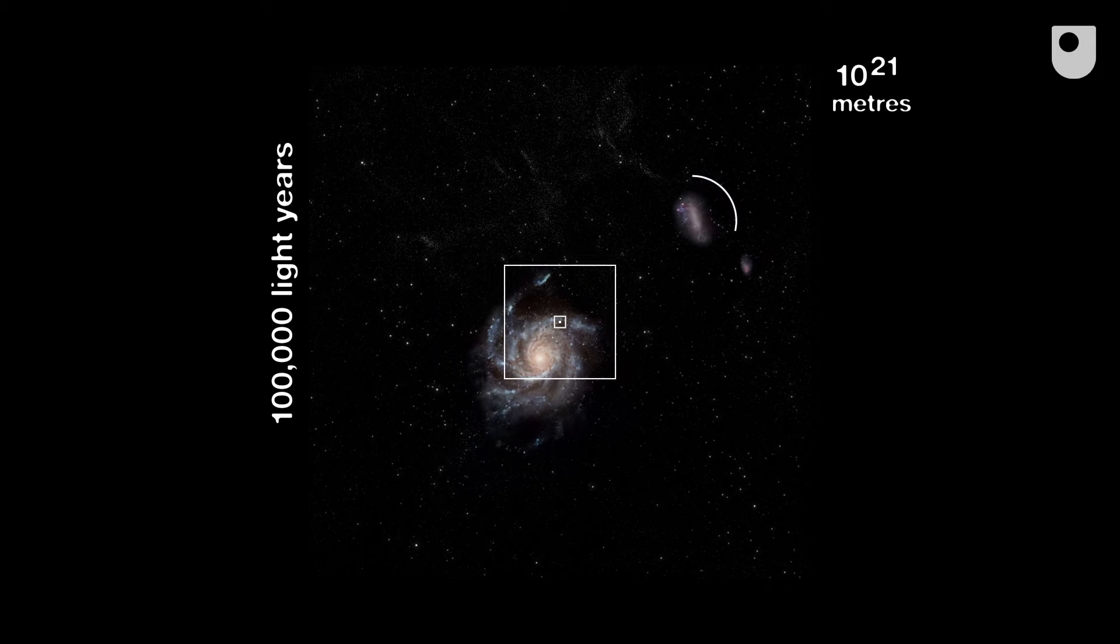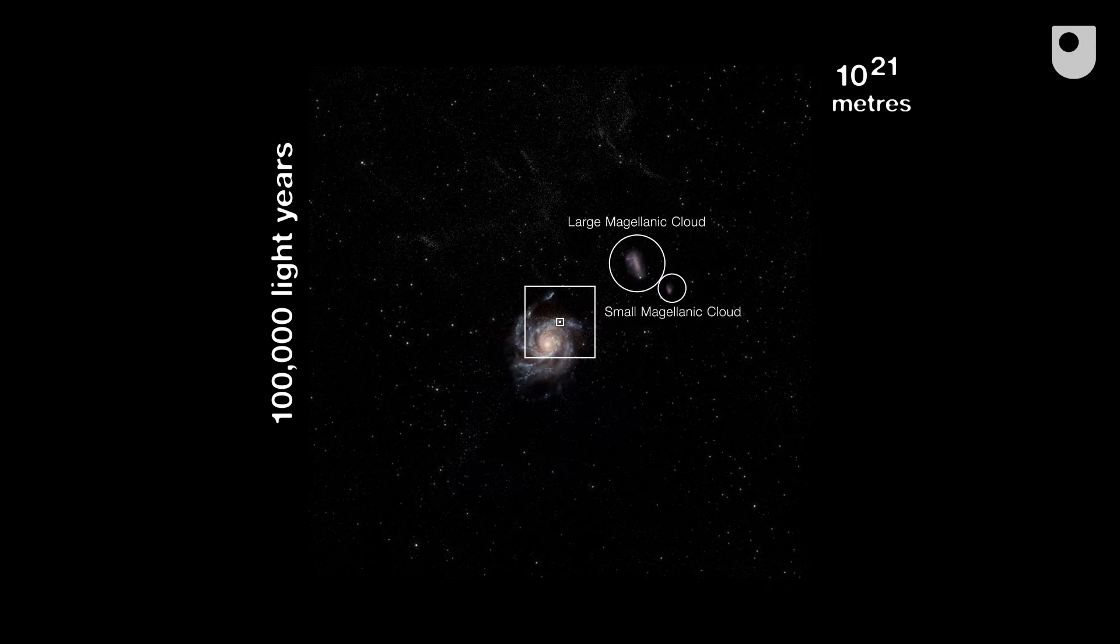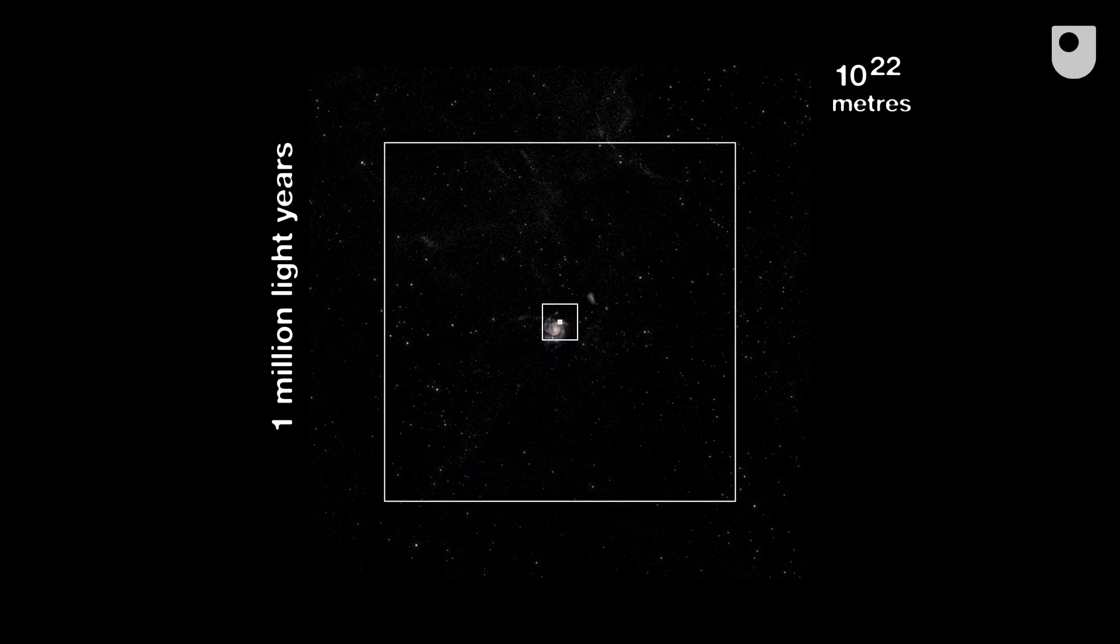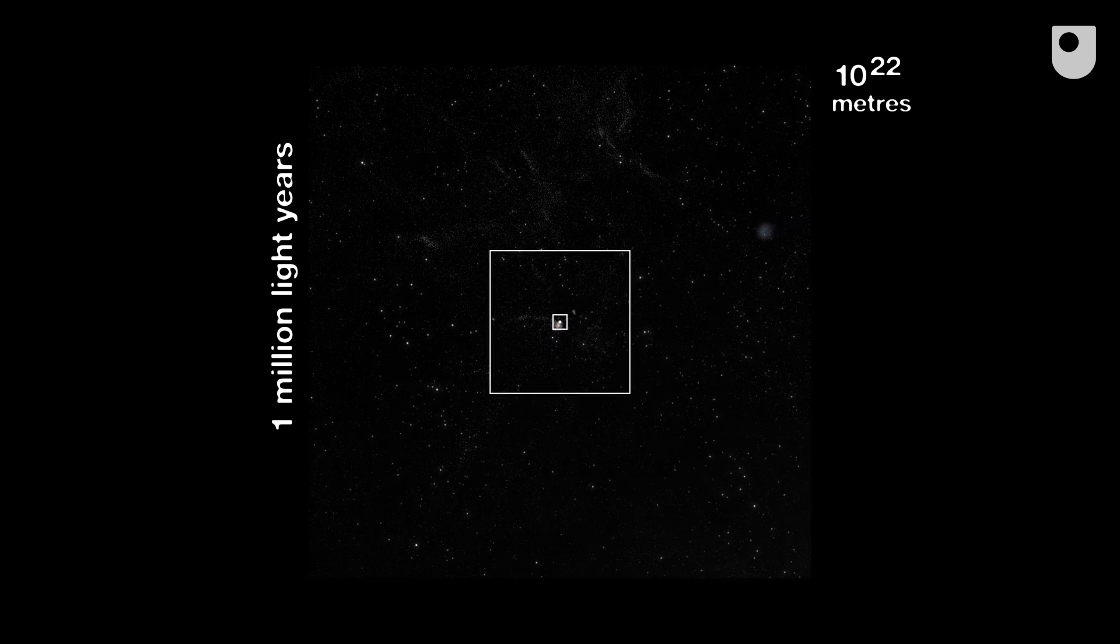These two dwarf galaxies are the Magellanic Clouds, which together with at least 80 others, make up what's known as the local group of galaxies. 10 to the 22, one million light years.